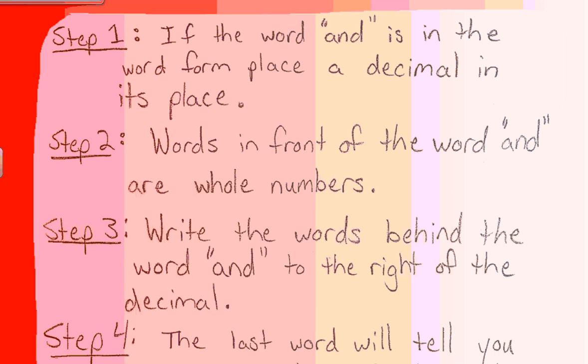Let's look at step number one. Step number one simply says that if the word AND is in word form, then we're going to place a decimal in its place. Simply replace that word.